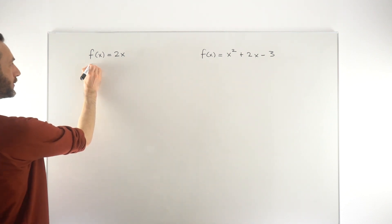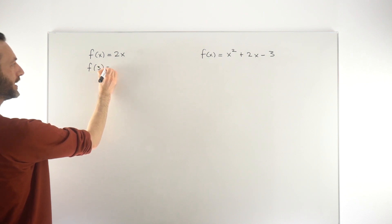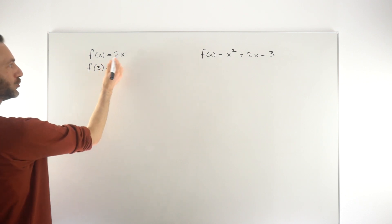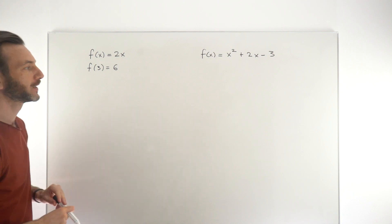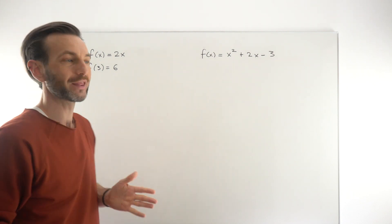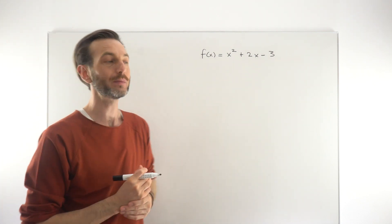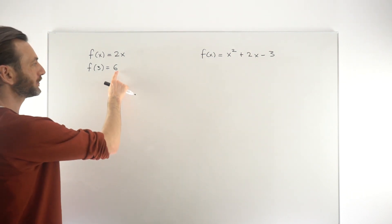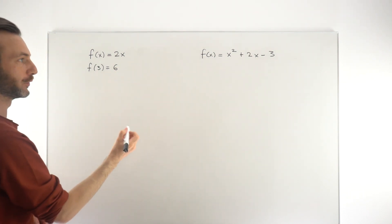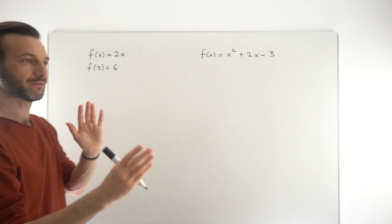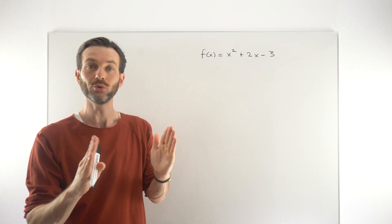So if you took f of 3, then 3 is the input, 2 times 3 is 6, so 6 is the output. When we look at the average rate of change of a function, what we're measuring is the difference between different output values in a specified interval of input values.